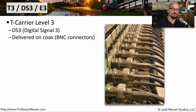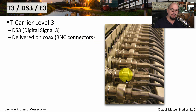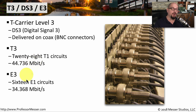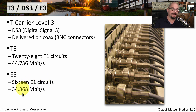For these legacy wide area networks, the next step up from a T1 is a T3, which stands for T Carrier Level 3. You might also hear this referred to as a DS3, or Digital Signal 3. It's usually brought into your facility over coax connections using BNC connectors. A T3 provides 28 separate T1 circuits for a total line rate of 44.736 megabits per second. In Europe, the E3 combines 16 E1 circuits for a total line rate of 34.368 megabits per second.